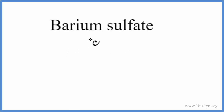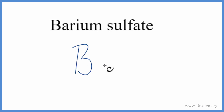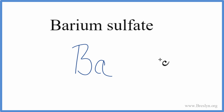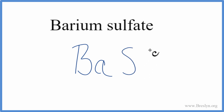To write the formula for barium sulfate, we go to the periodic table. Barium — the element symbol is Ba. And sulfate, that's not on the periodic table; that's a polyatomic ion. So we need to look that up on a table of polyatomic ions. Sulfate is SO4 2-.